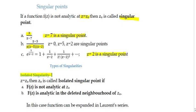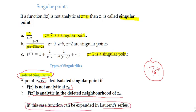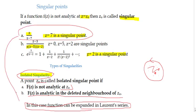The first type of singularity is isolated singularity. A point z0 is called an isolated singular point if: first, f(z) is not analytic at z0; and second, f(z) is analytic in the deleted neighborhood of z0 — meaning f(z) is analytic at all points except z0. When this scenario exists, z0 is called an isolated singular point, and the function can be expanded in a Laurent series.